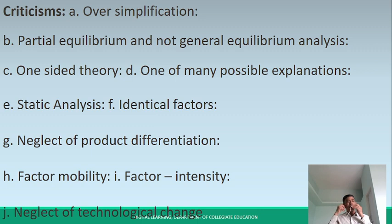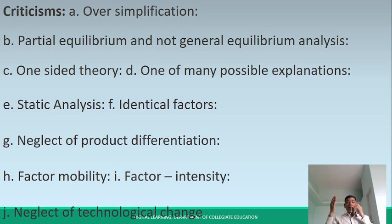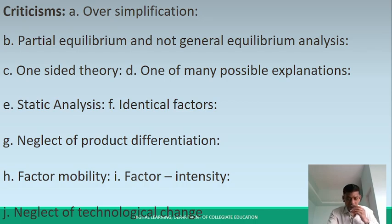It neglects product differentiation and also neglects factor mobility and factor intensity. Very importantly, it also neglects technological change — technology changes over time but this is neglected. These are the criticisms of this theory.